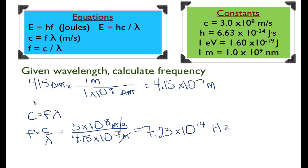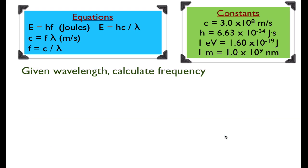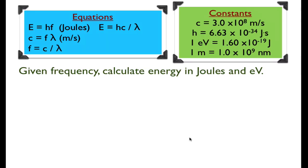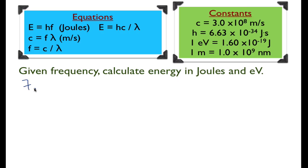So that's step one: we went from wavelength in nanometers, converted to meters, and then calculated the frequency in hertz — 7.23 times 10 to the 14 hertz.